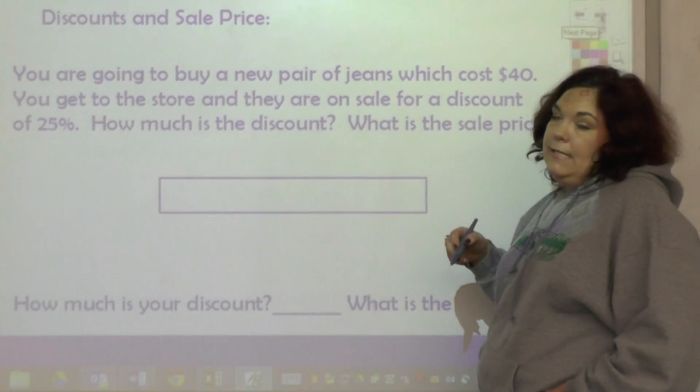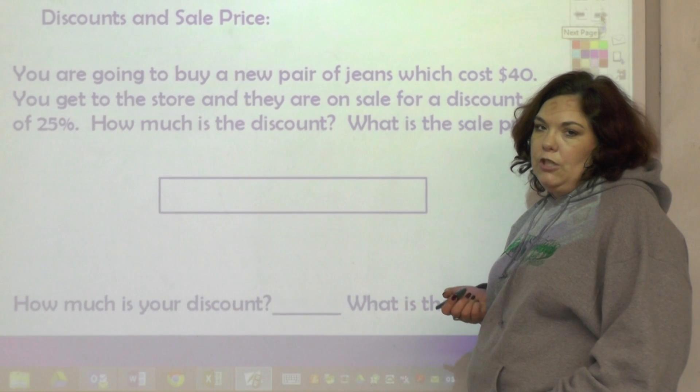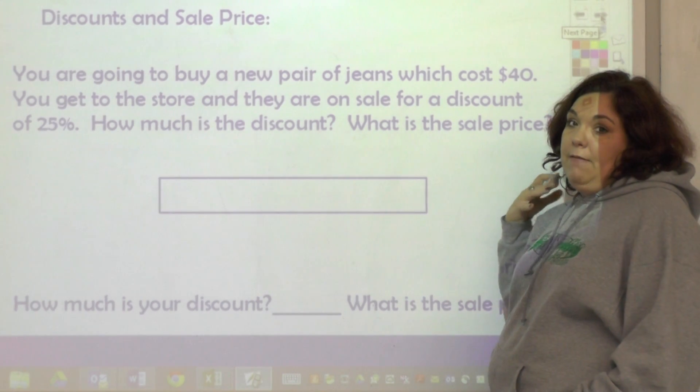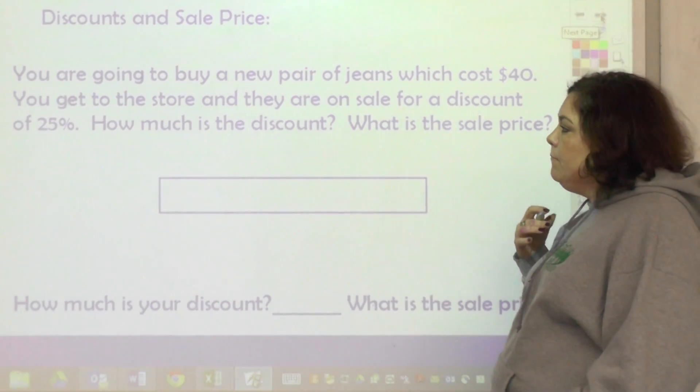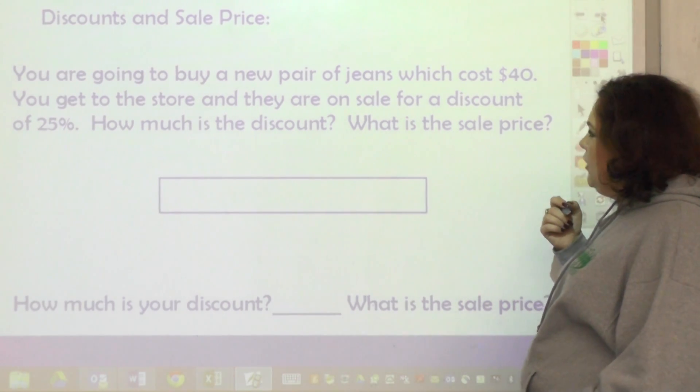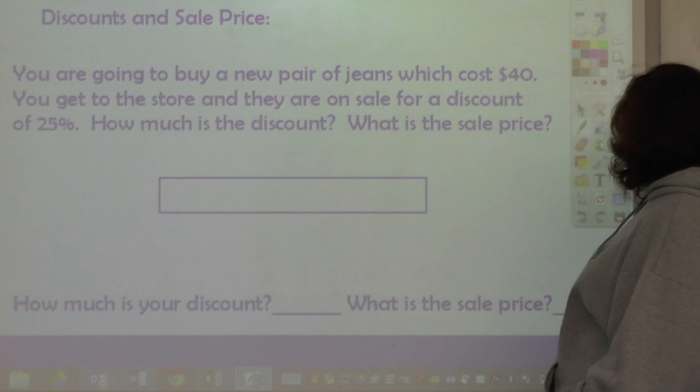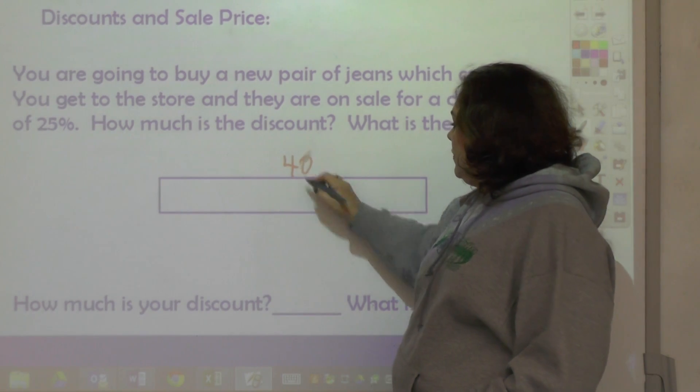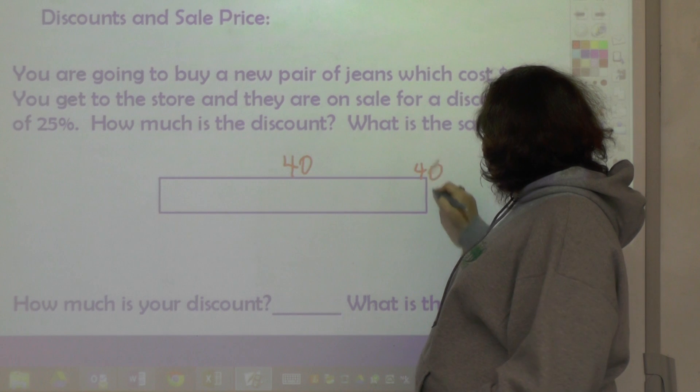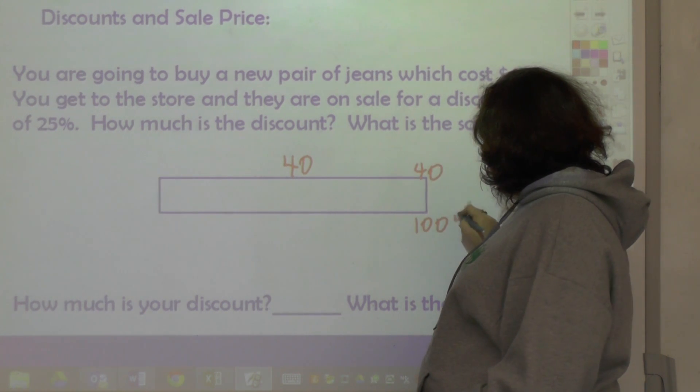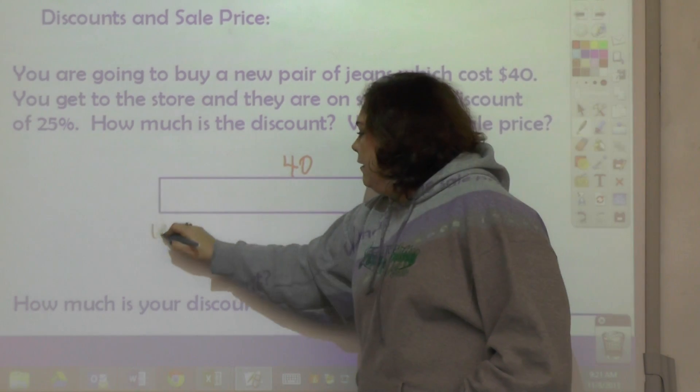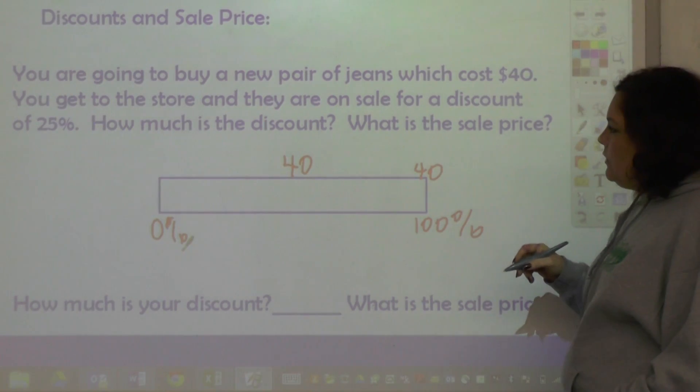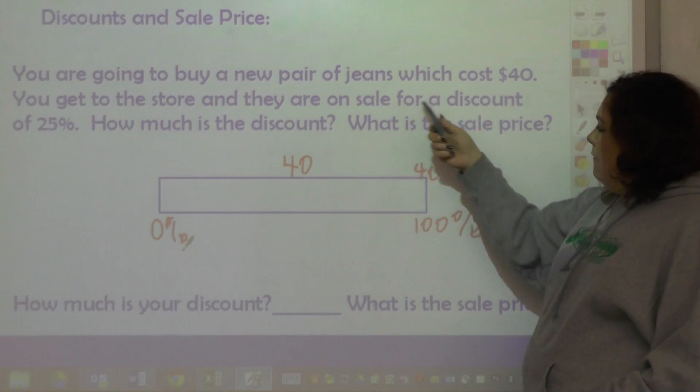So now let's talk about discounts and sale price. Let's put this into context of an actual word problem and things that you come across in real life. You are going to buy a new pair of jeans which cost 40 dollars. So the information here is that this is 40 dollars, the whole amount. 40 goes here, that's 100%, and that's zero percent.